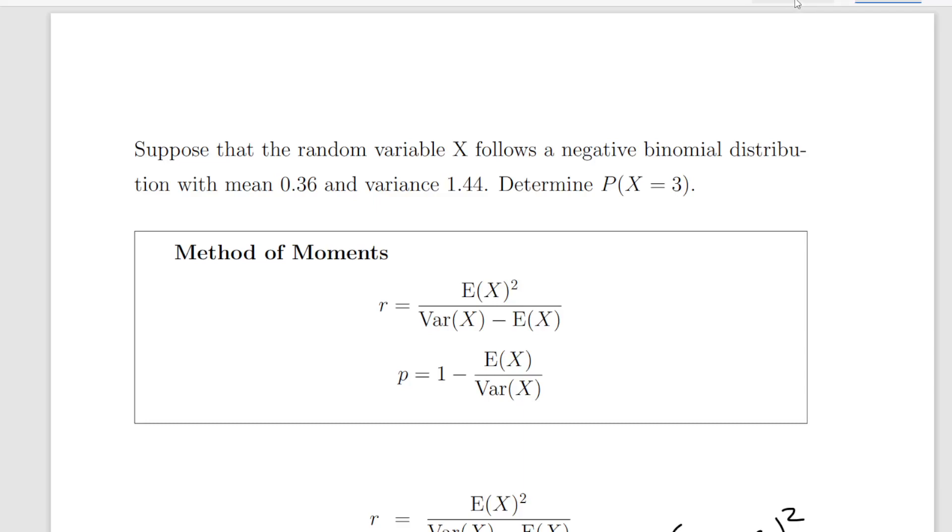We're not really going to get into things like the Poisson-Gamma mixtures here. Suppose that a random variable X follows a negative binomial distribution with mean equals 0.36 and variance of 1.44. The question we're asked is, calculate the probability of X equal to 3.